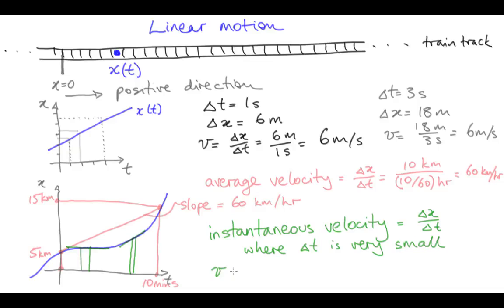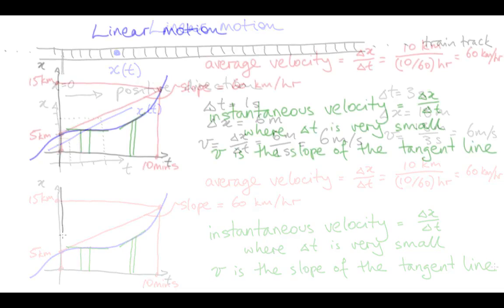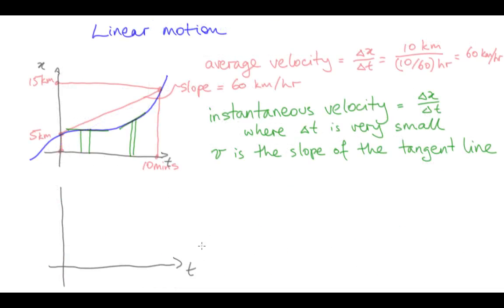The lines that just touch the curve here are called tangents to the curve, and this is something you'll study more in calculus. From looking at this blue curve of position as a function of time, and the instantaneous velocities it implies, it seems the train slowed down and stopped at a station briefly before increasing its speed as it continued on its journey.